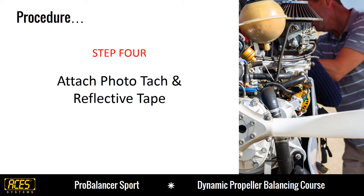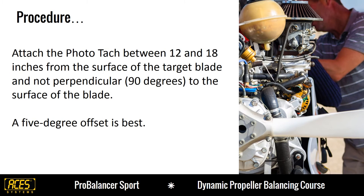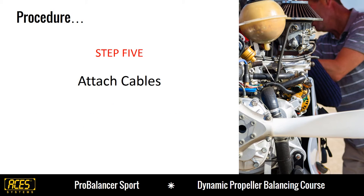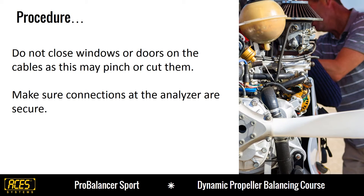Now attach the photo-tac and reflective tape. You may use tape to position the photo-tac on the cowling between 12 and 18 inches from the surface of the target blade and not perpendicular to the surface of the blade. We have found that a 5-degree offset works best. Install a 2-inch long and not less than 1-inch wide piece of reflective tape, positioned approximately 14 inches from the center of the prop shaft. Now attach your cables, making sure to route them away from rotating and high-temperature components. You can secure these cables using wire ties or tape to prevent movement and possible damage. Remember, these cables can be damaged when you close doors or windows on them, and make sure the cables are securely connected at the analyzer. Be careful when making these connections to seat them correctly before you tighten them.